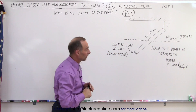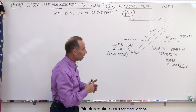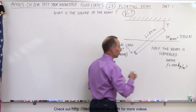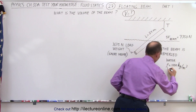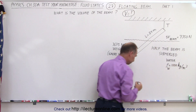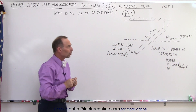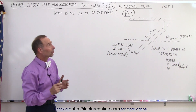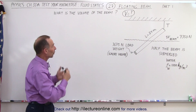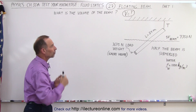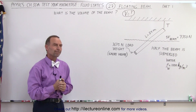It is water, and the density of water is 1000 kilograms per cubic meter. Now what we're trying to find in this case — this is part one of the problem — we're trying to find the volume of the beam.